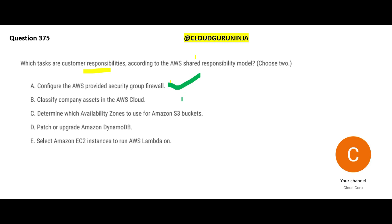Option B — classifying company assets in the AWS cloud — is again a customer responsibility. AWS has given you different resources; if you are working for a Bank of America and there are certain resources you created for them, that classification is your responsibility. AWS does not get involved, and rightly so, because if it went in and said 'hey, you guys are saving credit card information and social security information,' the environment would not be safe. So option B is your responsibility as a customer. We needed to choose two answers and we have chosen two.